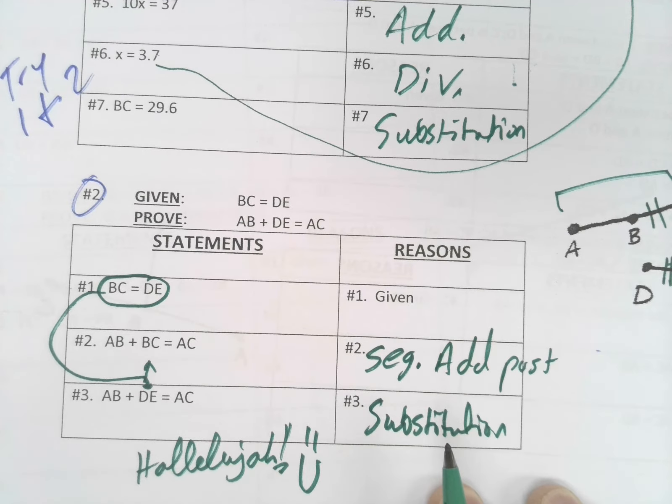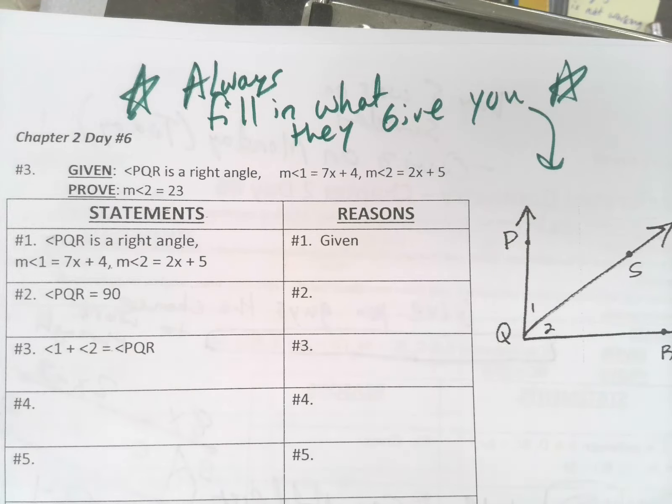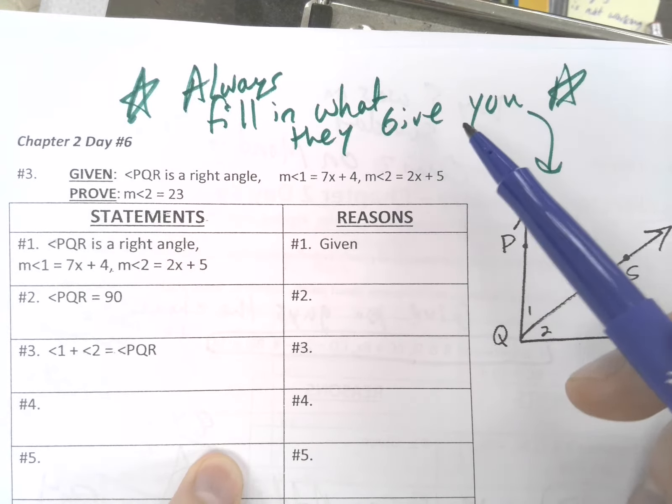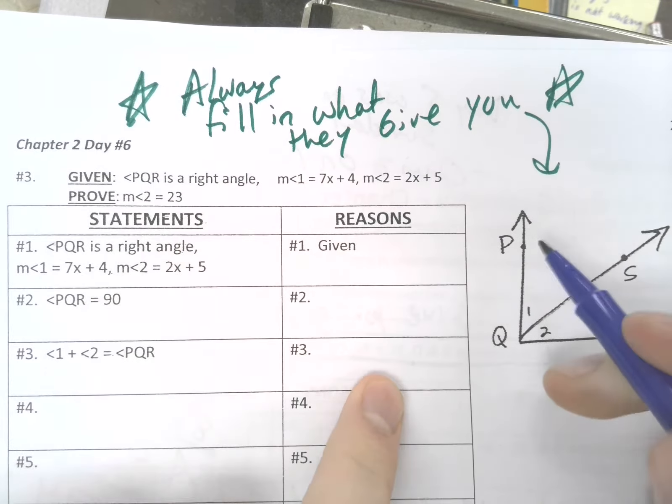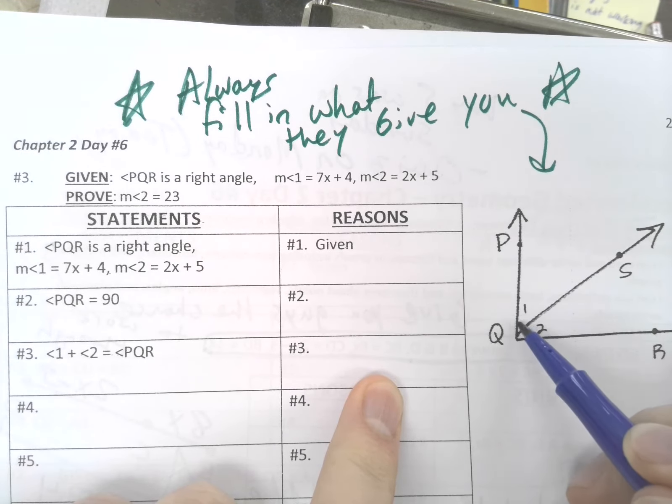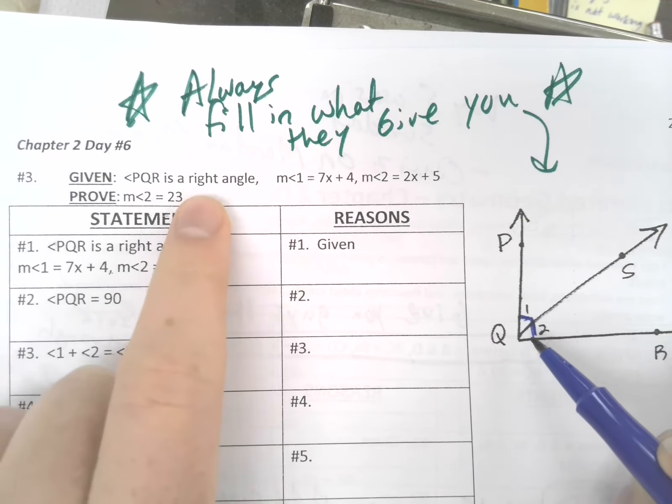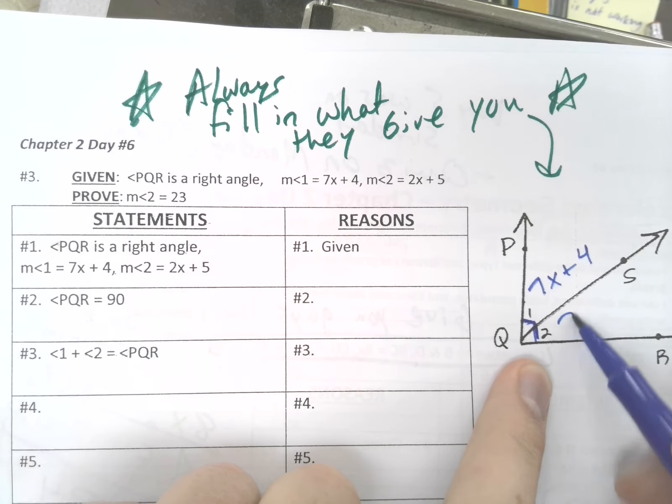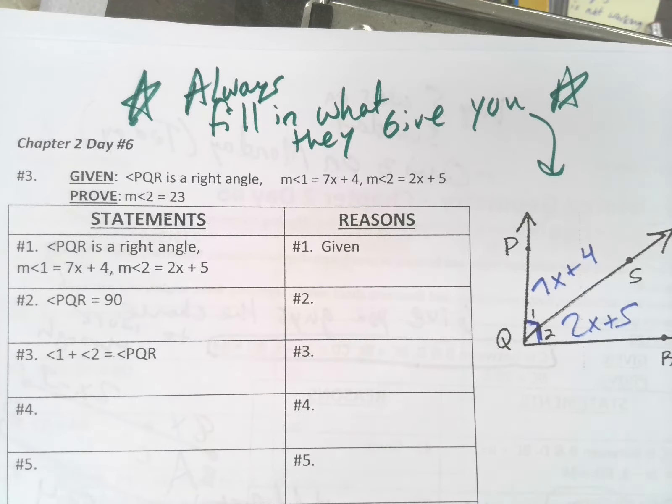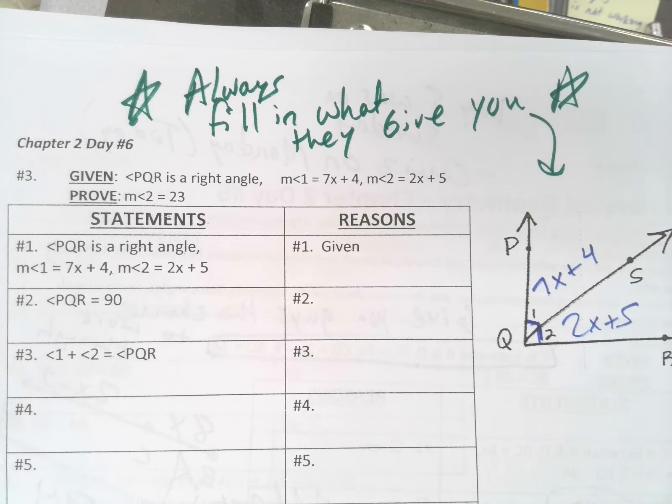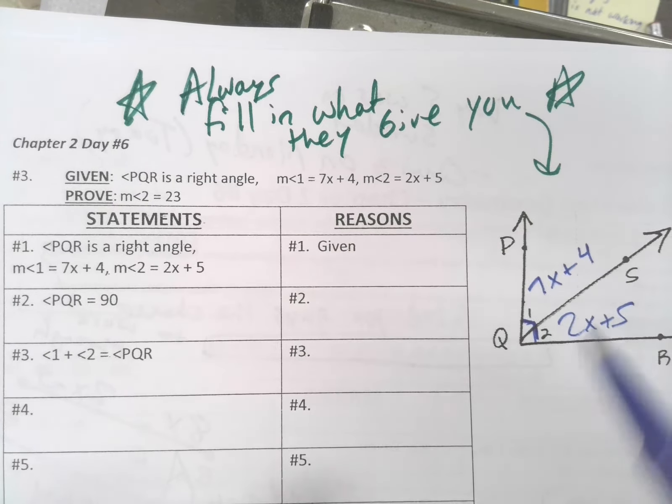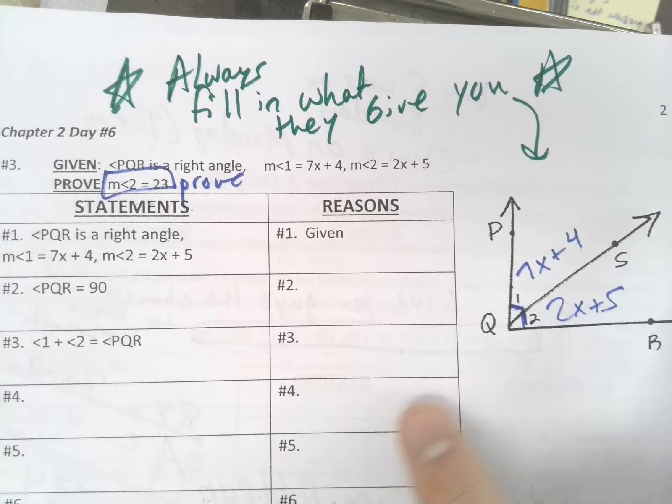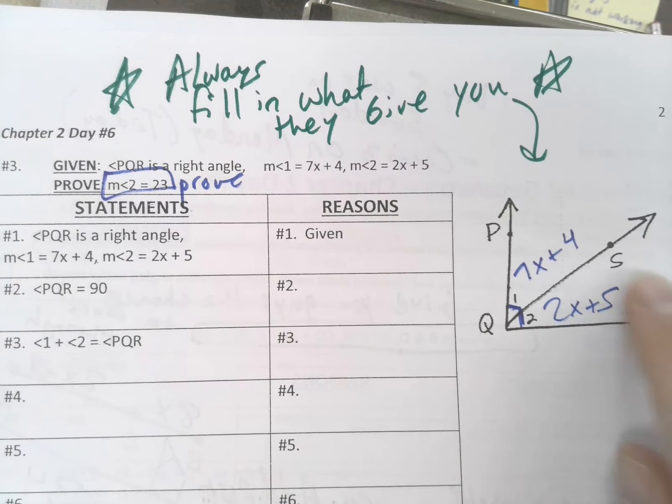So as we move on to page two, guys, I want to point your attention up here. Always fill in what they give you. Notice how we're told angle PQR is a right angle. Show that on our graph here. Angle one is 7x plus 4, and angle two is 2x plus 5. That's all we can fill in right now. We're going to need to prove that angle 2 equals 23 degrees.